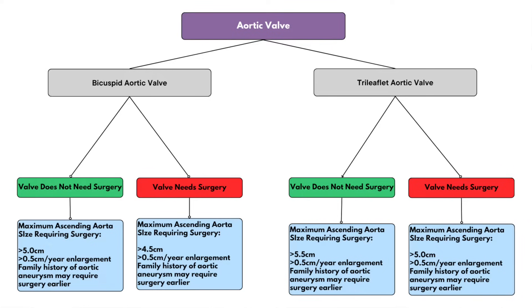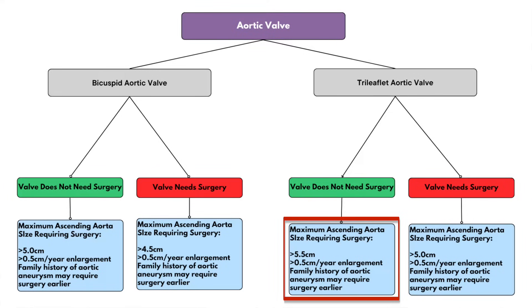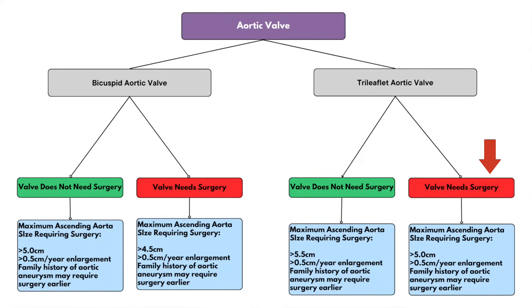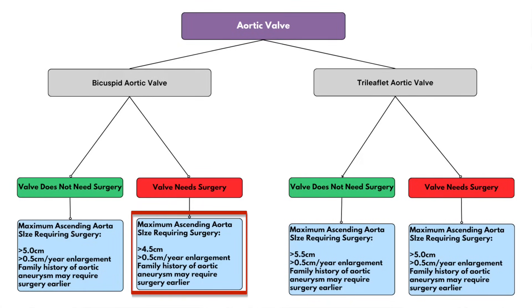The key numbers are on this algorithm — you can take a photograph or screenshot it for reference. It's based on guidelines and is very accurate. If you've got a normal tri-leaflet valve, the two numbers to remember are 5.5 and 5.0 centimeters. If your aortic valve is normally functioning, we won't replace the aorta until it reaches 5.5 cm; if the valve is abnormal, we replace it at 5.0 cm. For a bicuspid aortic valve, the numbers are 5.0 and 4.5 cm: normal function means we wait until 5.0 cm, and if the valve is abnormal and needs an operation, we replace the aorta at 4.5 cm.